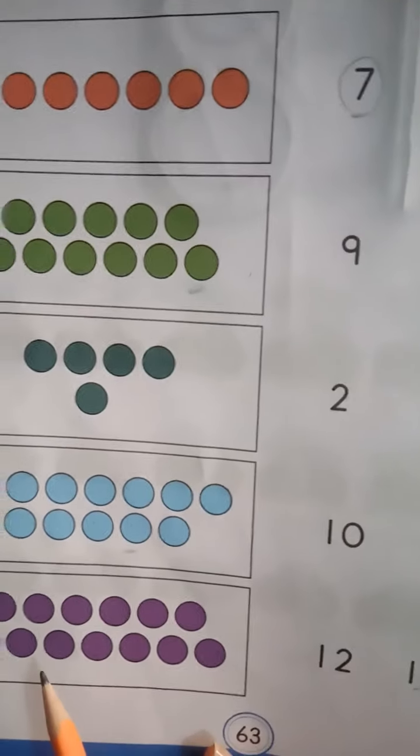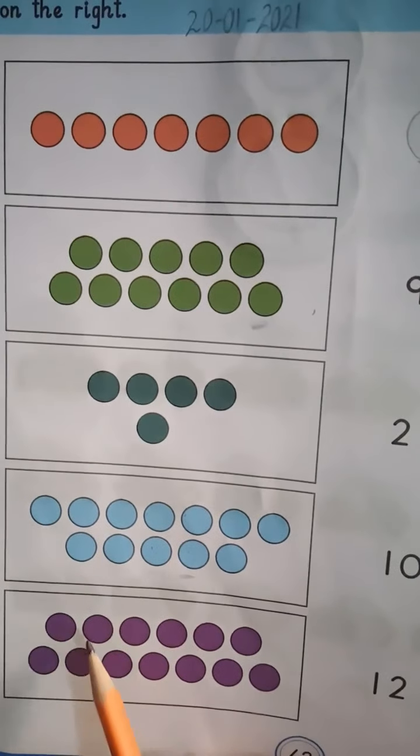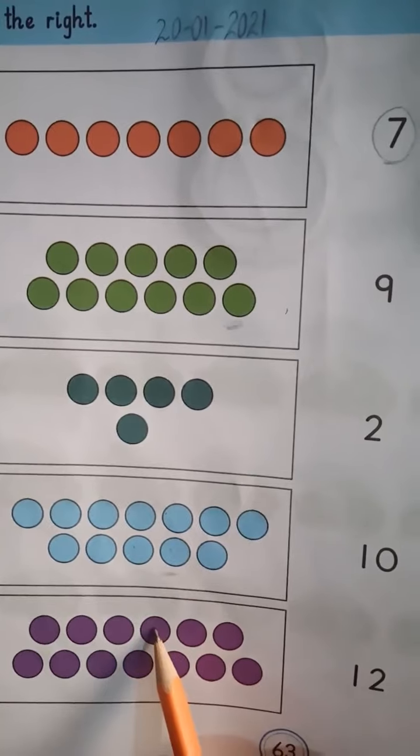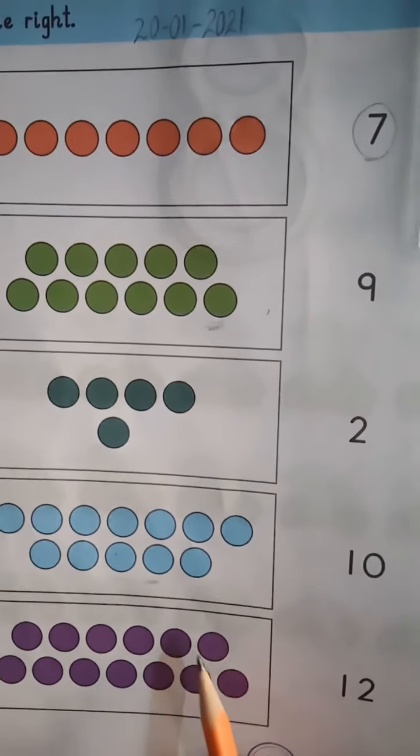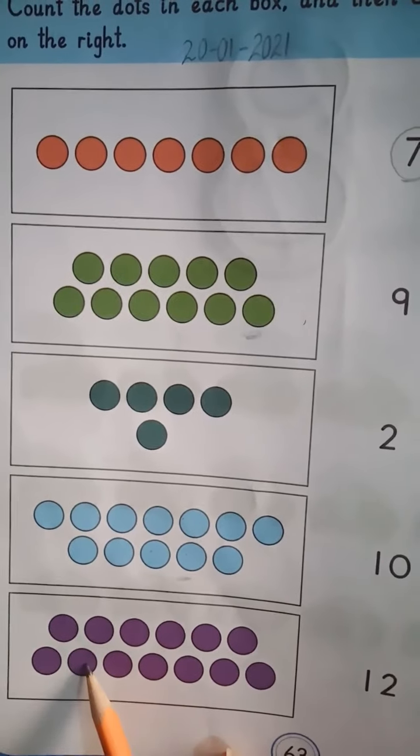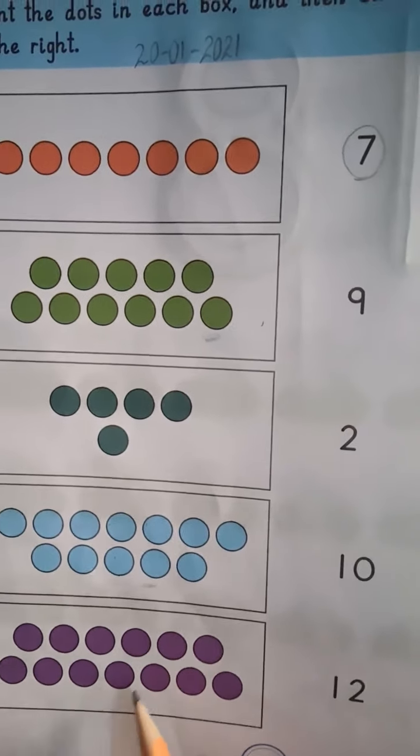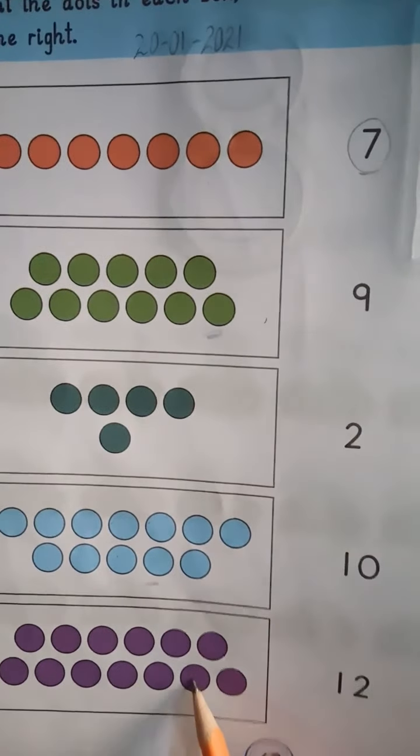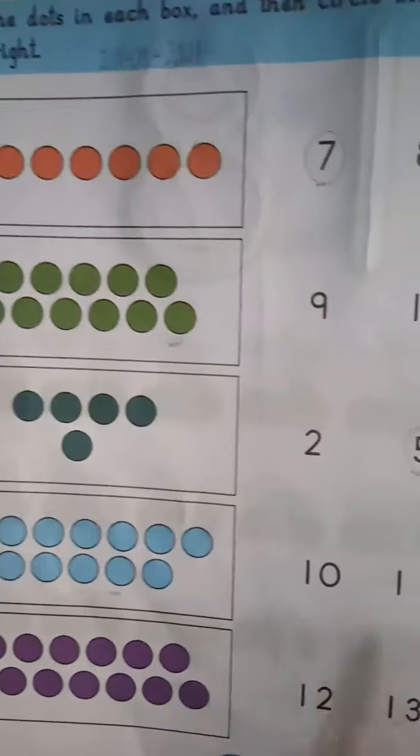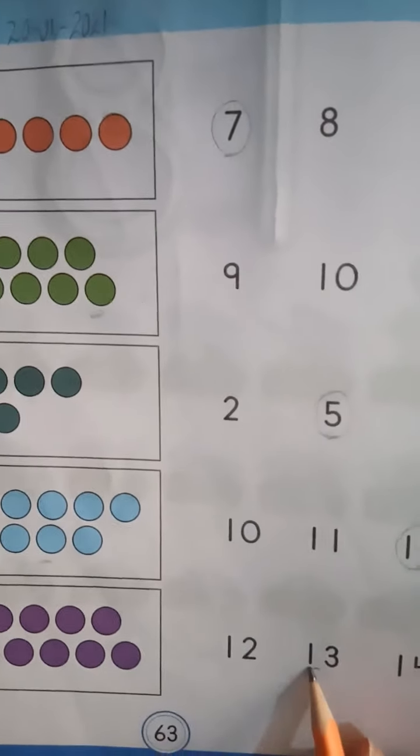Next, count the dots. One, two, three, four, five, six, seven, eight, nine, ten, eleven, twelve, thirteen. There are thirteen.